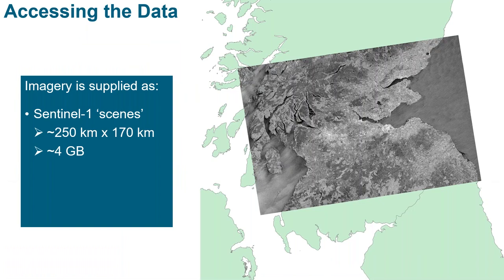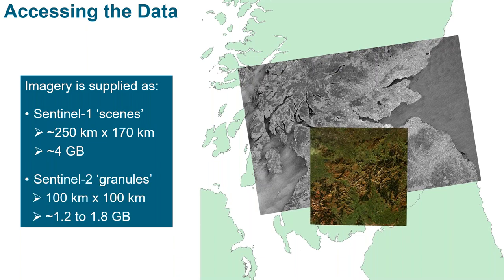Before showing you how to access the data on CEDA, I just wanted to say a little about how the data is supplied, because it's chopped up into manageable size chunks to make it easier to download and store. For Sentinel-1 this is called scenes — these cover the full width of the orbit swath and are about 170 kilometres high, with each file around four gigabytes. For Sentinel-2, these are supplied in square tiles which are exactly 100 by 100 kilometre squares called granules, each around 1.2 to 1.8 gigabytes, so a little bit smaller.